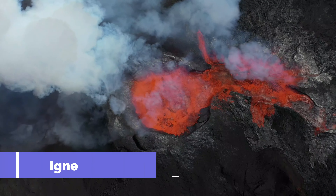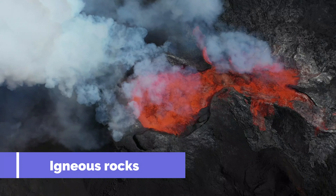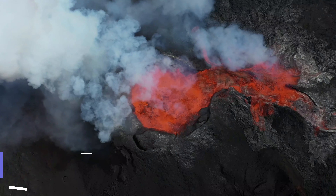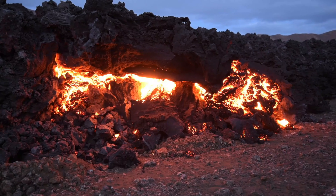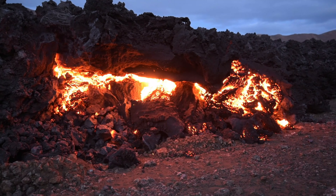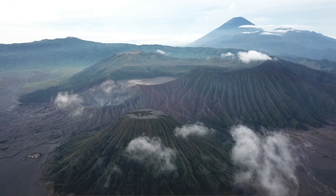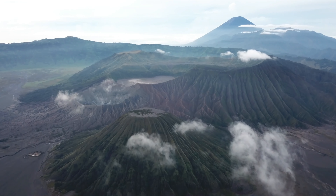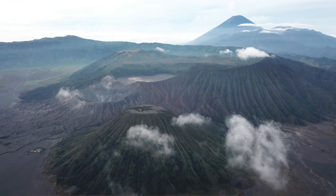Igneous rocks are formed from hot molten magma or rocks that cool and solidify, which is why they often have a glossy and crystalline texture and tend to be darker. They are also often associated with volcanic activities.